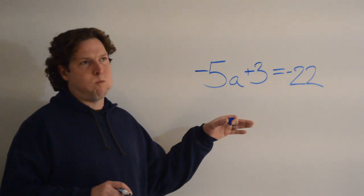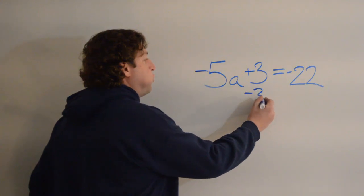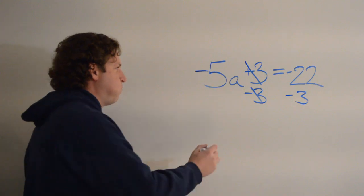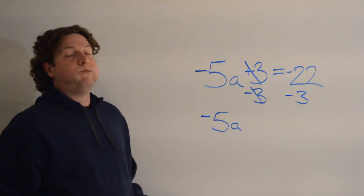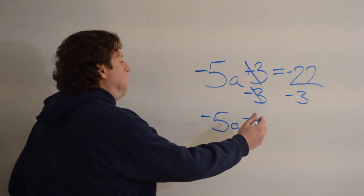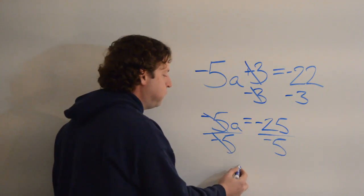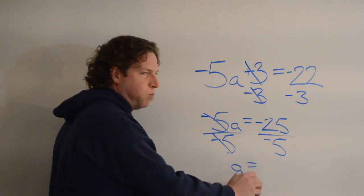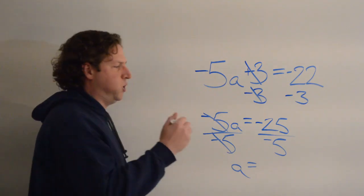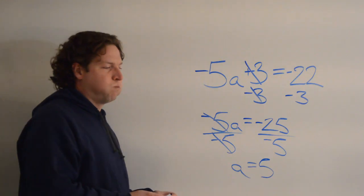We have negative 5a plus 3 equals negative 22. I'm going to minus 3 from both sides — we're going to do the opposite operation — to cancel and isolate the variable. Negative 5a equals negative 22 minus 3, which gives negative 25. At this point I can just go ahead and divide by negative 5 from both sides of the equation. I get a equals negative 25 divided by negative 5. It's going to be positive 5 because it's a negative divided by a negative. I'm going to hope that you can check this because I'm going to try to see if I can get one more grape in here. It's 5 — I promise it's 5. Let's see if we can put another grape in here. This is number 11.